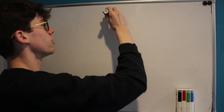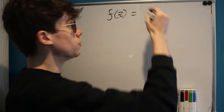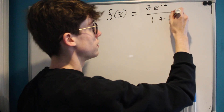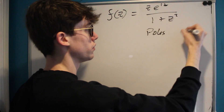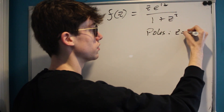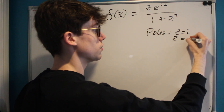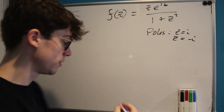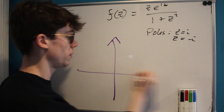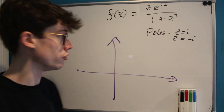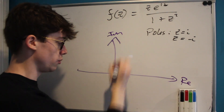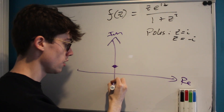The first thing we're going to do is find a complex-valued function of z, equal to z e to the iz over 1 plus z squared. We've already identified that we have poles when z equals i or z equals negative i. Let's capture this on an Argand diagram so we can begin to choose the path for our contour. This is our imaginary axis, this is our real axis, and at the points i and minus i we've got poles.